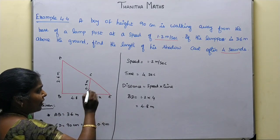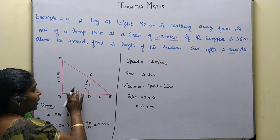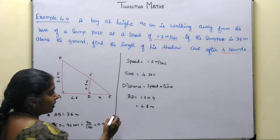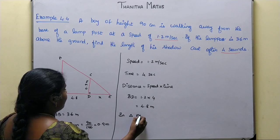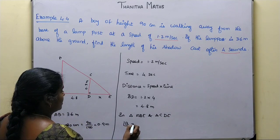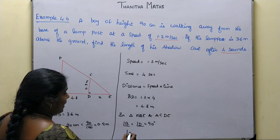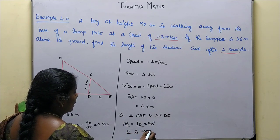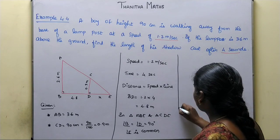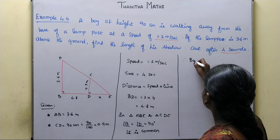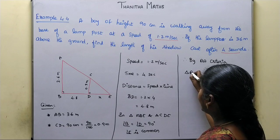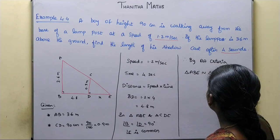We need to find this length x. Angle B is equal to angle D, both equal to 90 degrees, and angle E is common. In triangle ABE and triangle CDE, by AA criteria, we can say that those two triangles are similar triangles. Therefore, triangle ABE is similar to triangle CDE.